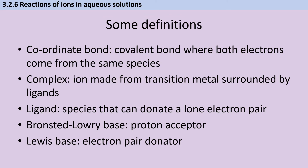Before we get into the meat of the AQA A-level chemistry specification, it's worth recapping some definitions that are important for this video. A coordinate bond, sometimes called a dative covalent bond, is a covalent bond — a bond in which there's a shared pair of electrons — but both of those electrons have come from the same species.